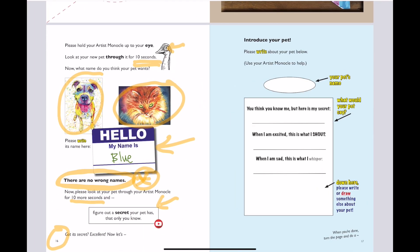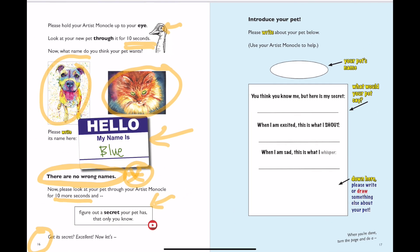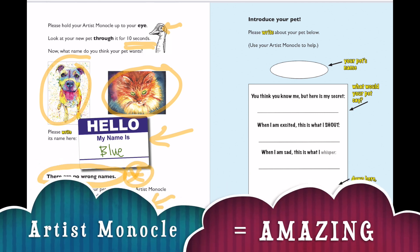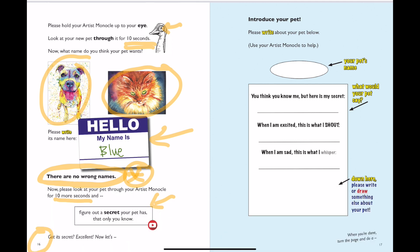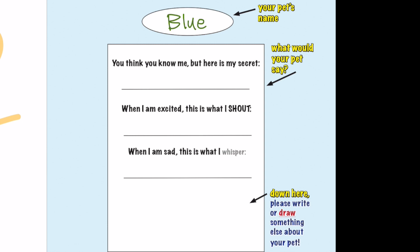All right, you're back — great, got its secret. Now let's go over here to this other page and we're going to introduce your pet. Write the things in the blank spaces here. If you get stuck or need some help filling out those blank spaces, use your artist monocle again — it's an amazing tool for all poets. It helps you fill in the blanks, write the words, make poems that nobody else can. My pet's name is Blue — I'm going to write it up here. Write your pet's name up there. 'You think you know me, but here is my secret' — you can pause this and fill in yours.